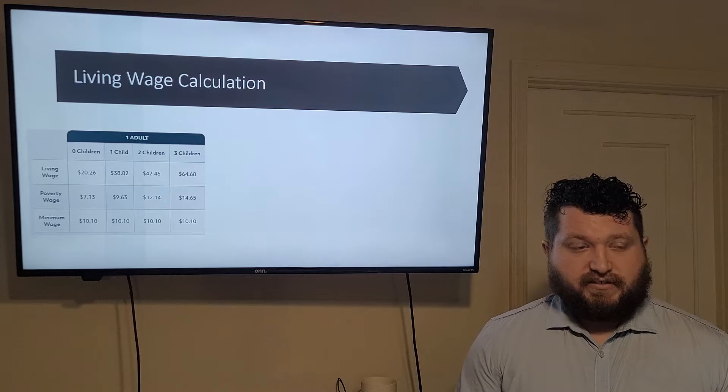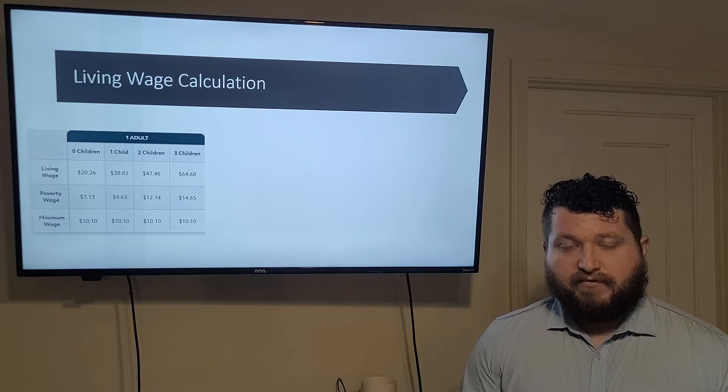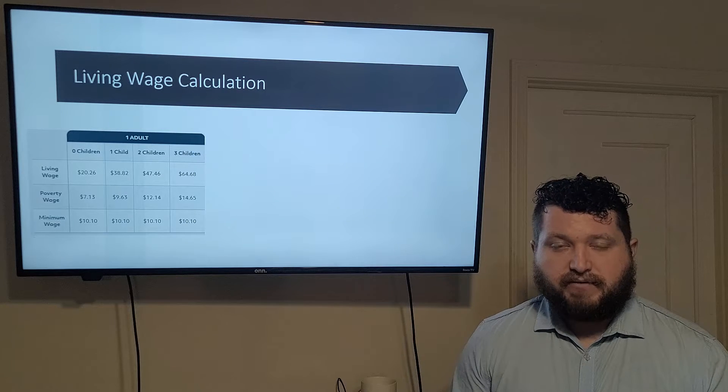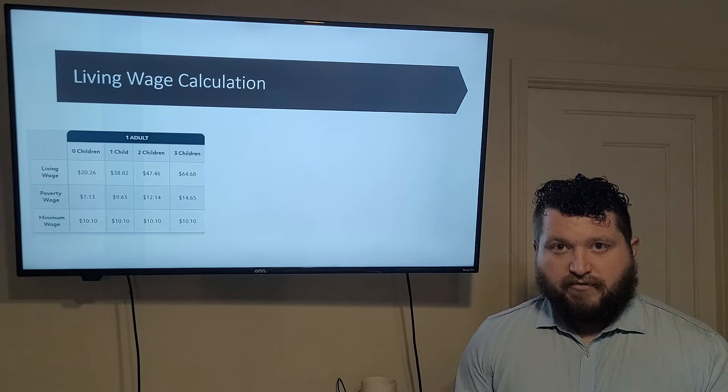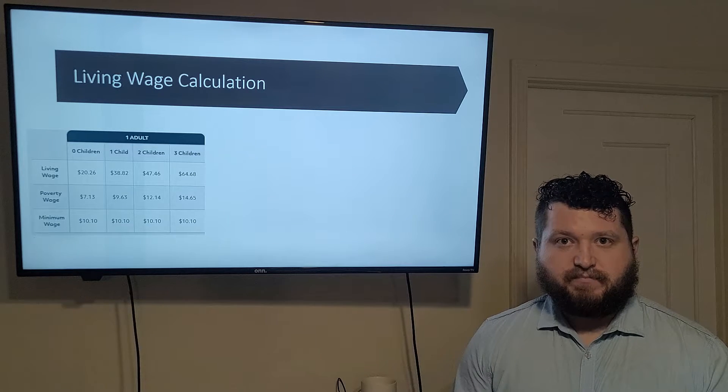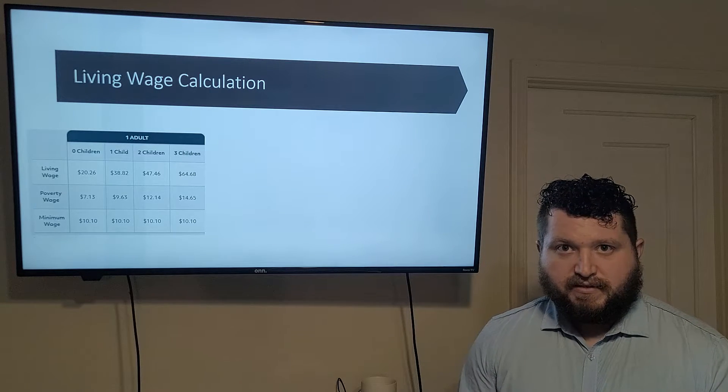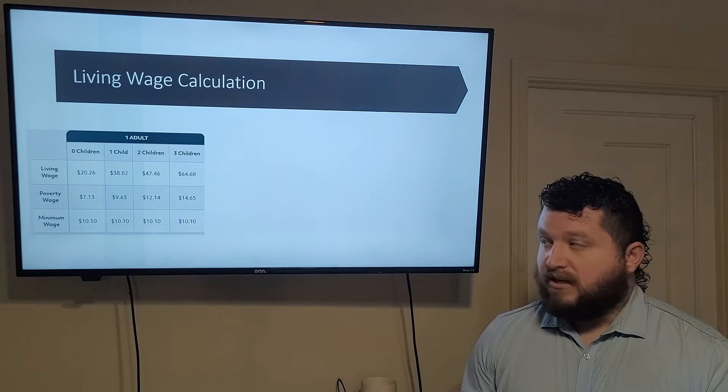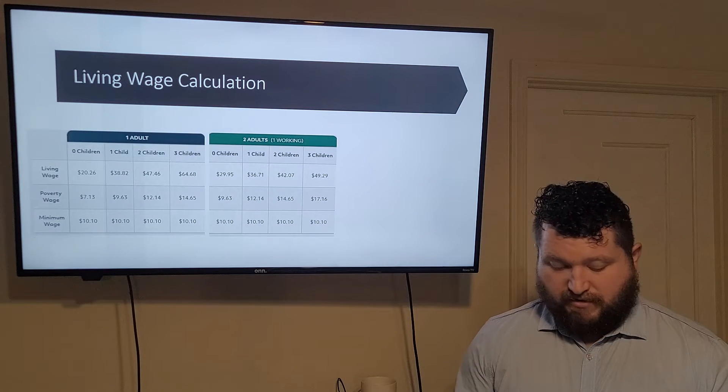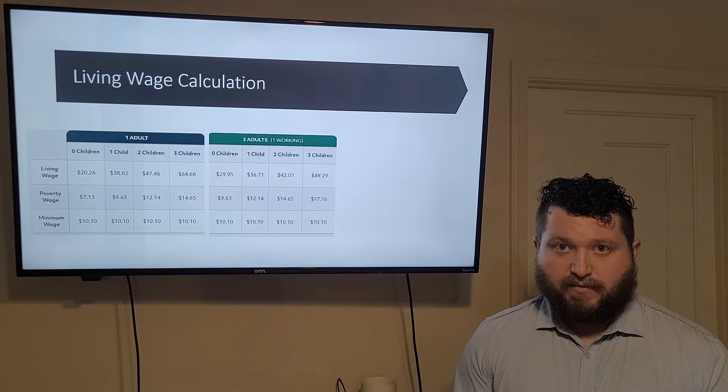A single person, a single adult in the state of Hawaii would have to be making twice the minimum wage to have what is considered a living wage. That means enough money to pay for housing and have all of their needs met comfortably. If you have three children as a single adult you have to have six times the minimum wage.